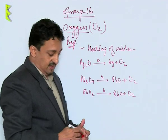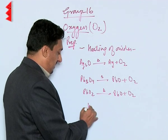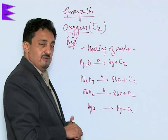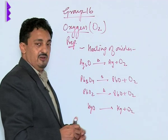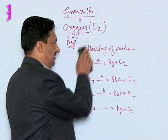So this is how they can also be easily obtained by heating these oxides. We can also obtain this by heating mercury oxide. So these are very simple ways of preparing oxygen by heating the oxides or from the nitrates and chlorates which we have discussed.